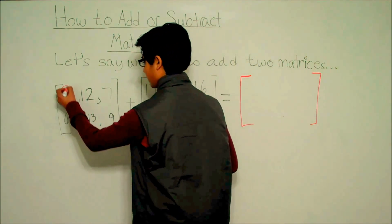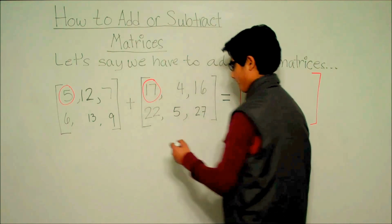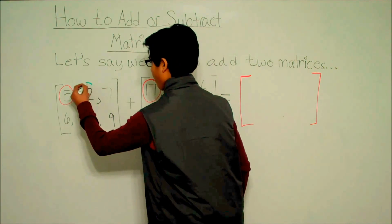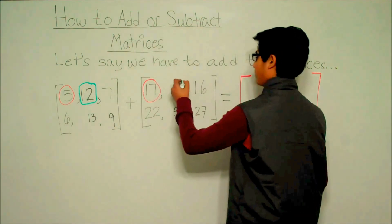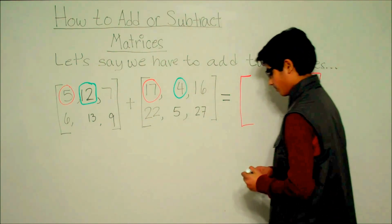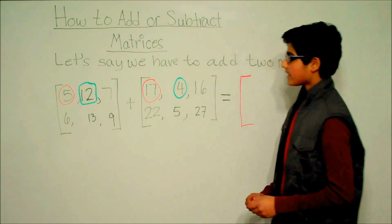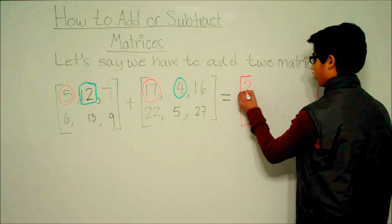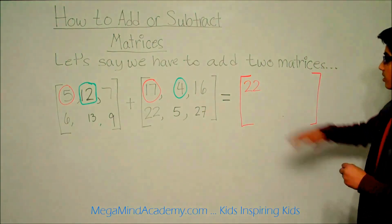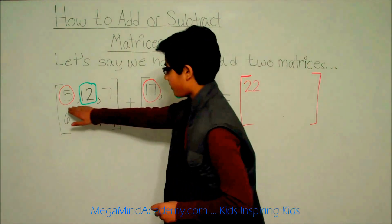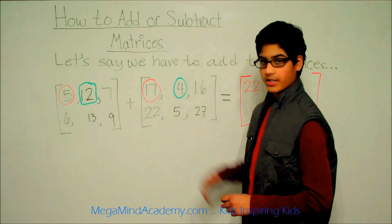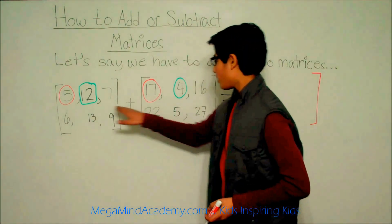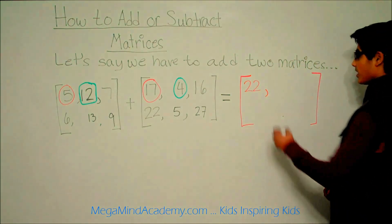So, we will be adding 5 and 17, 12 and 4, and so on. Let's add these two matrices. 5 plus 17 is 22. Notice how 22 goes in the same spot as 5 is in this matrix and 17 is in this matrix. The next number is 12 plus 4, which is equal to 16.